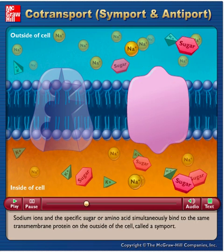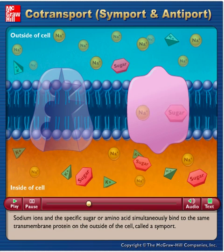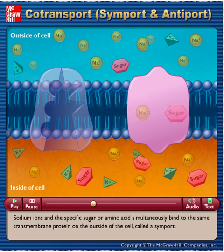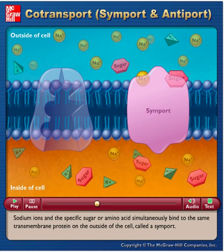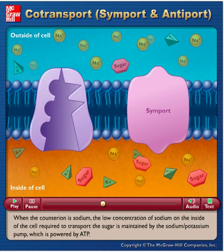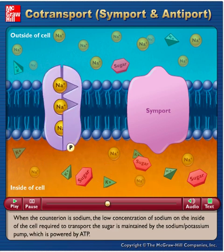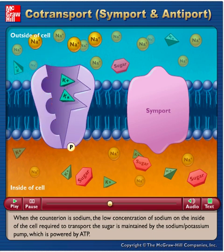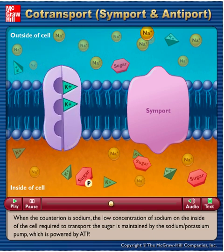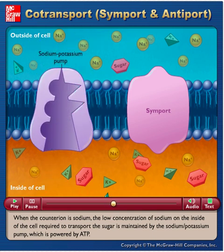Sodium ions and the specific sugar or amino acid simultaneously bind to the same transmembrane protein on the outside of the cell called a symport. When the counter ion is sodium, the low concentration of sodium on the inside of the cell required to transport the sugar is maintained by the sodium-potassium pump, which is powered by ATP.